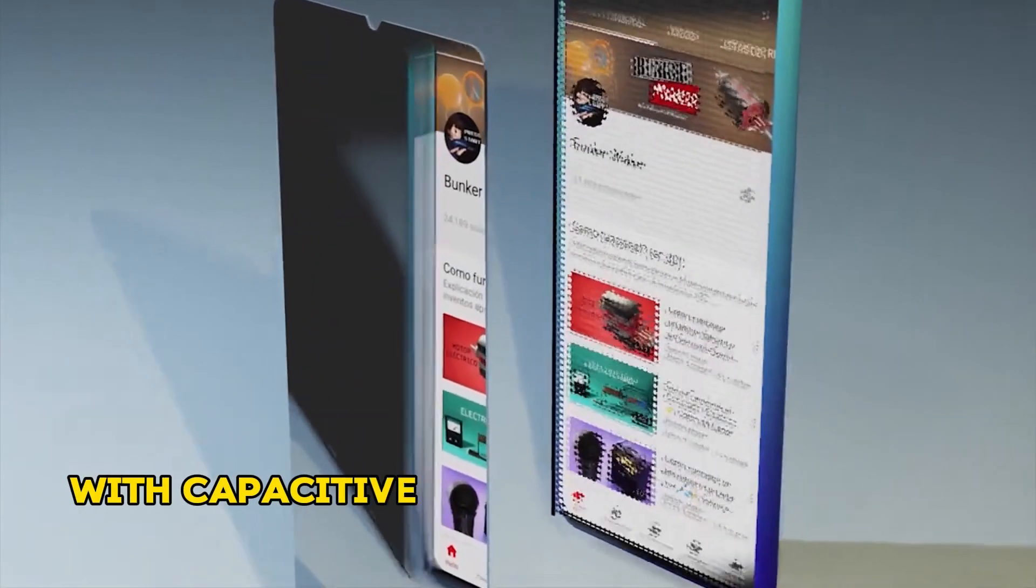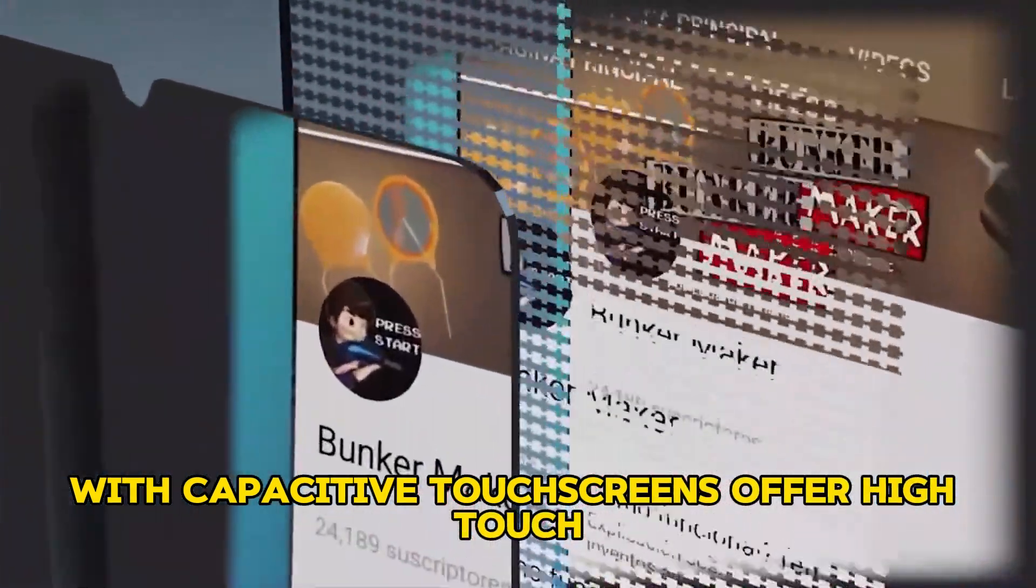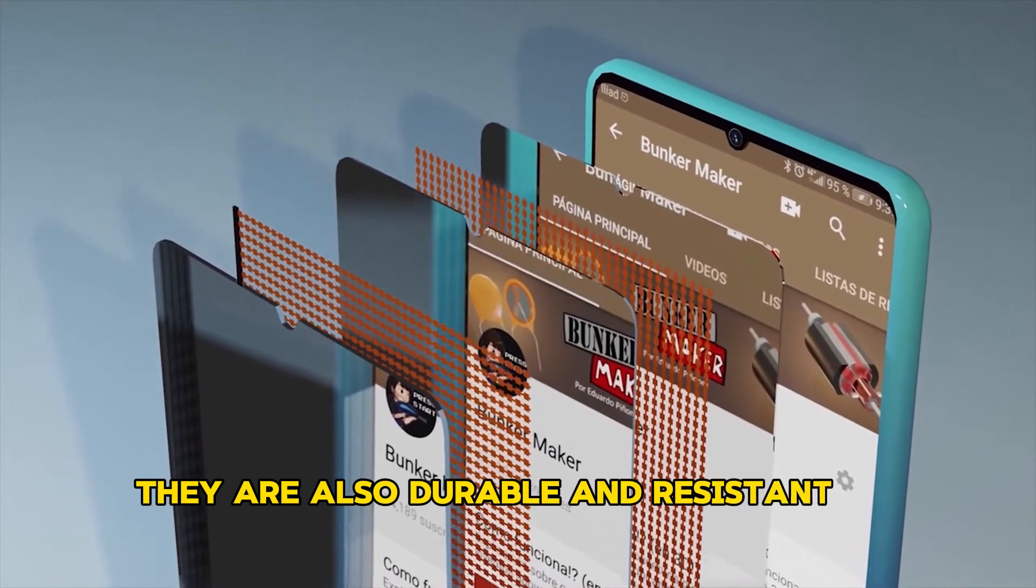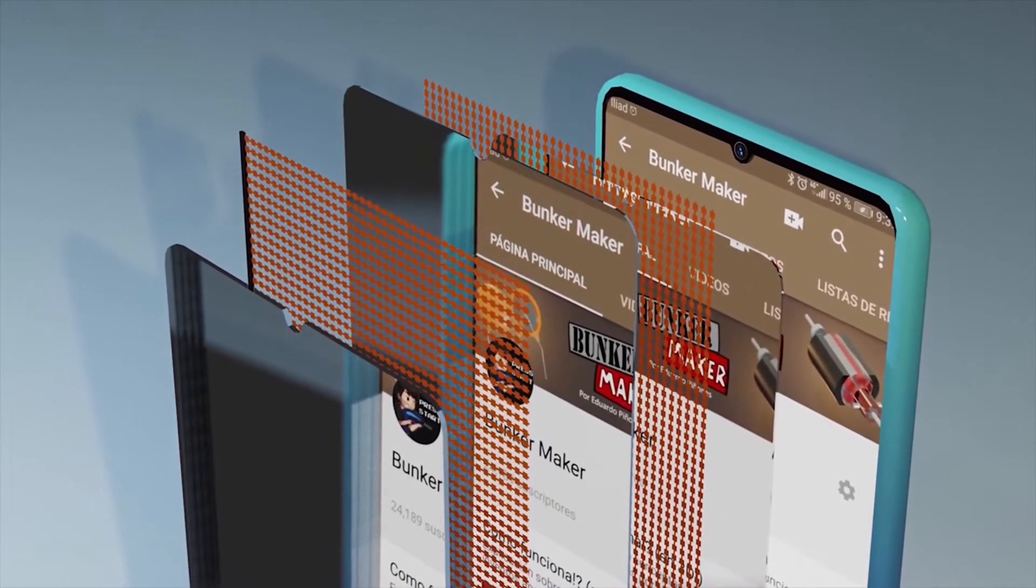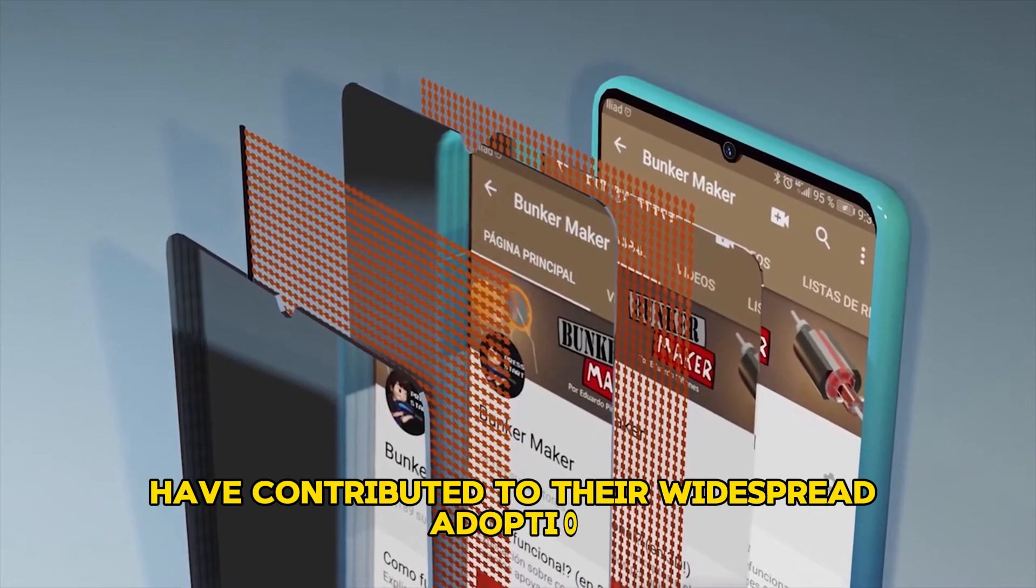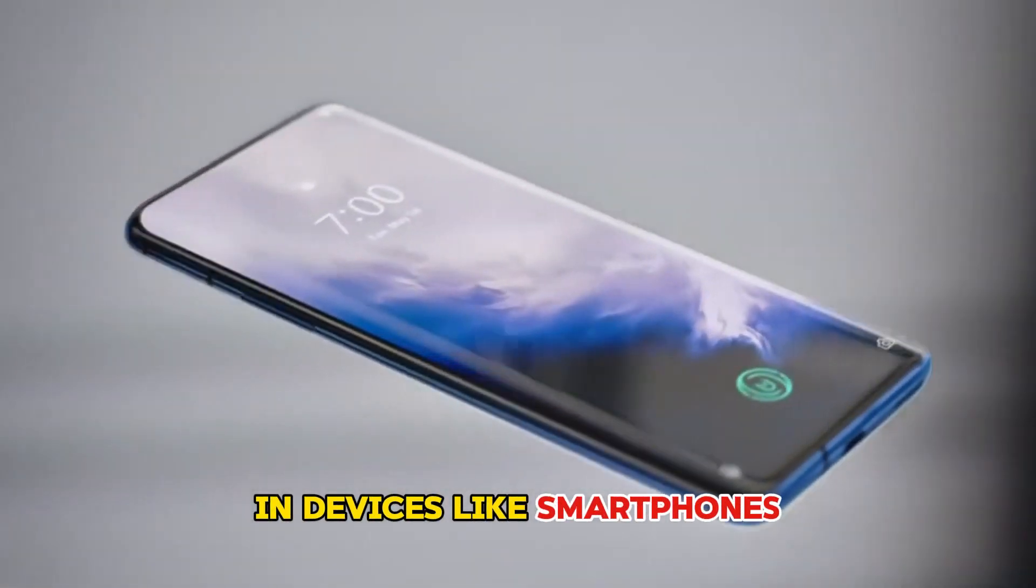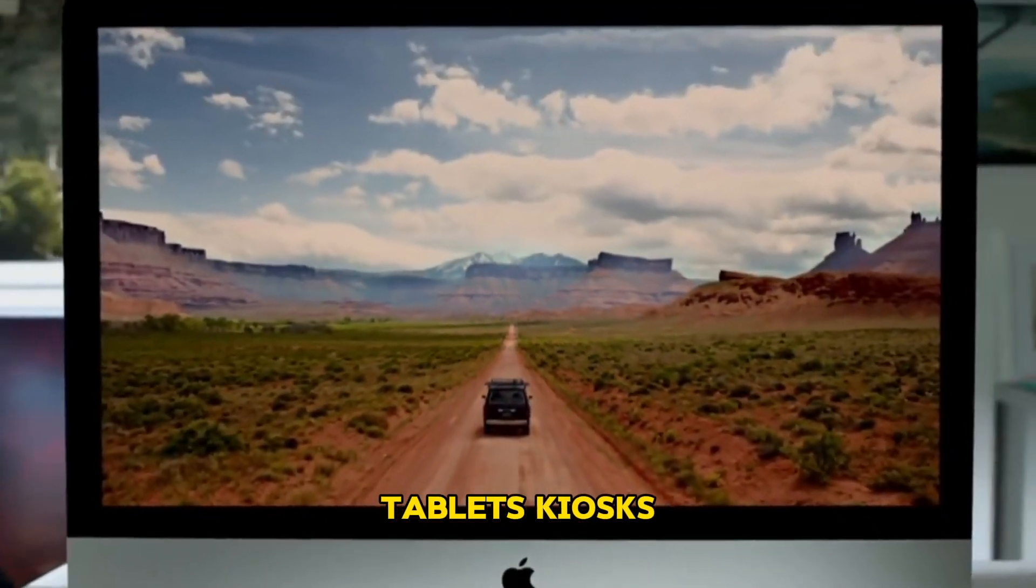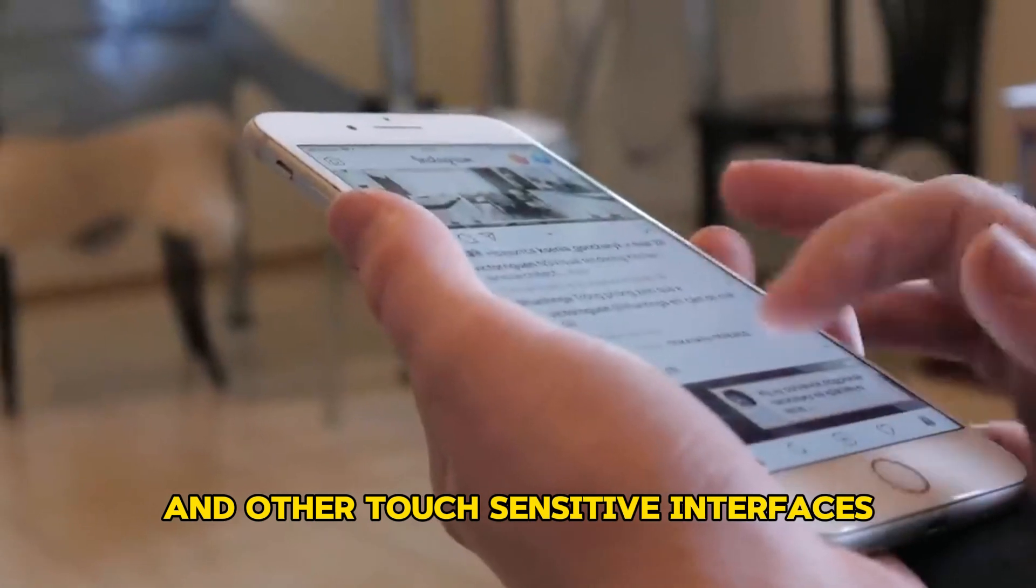Advantages. Capacitive touchscreens offer high-touch accuracy and responsiveness. They are also durable and resistant to scratches. These advantages have contributed to their widespread adoption in devices like smartphones, tablets, kiosks, and other touch-sensitive interfaces.